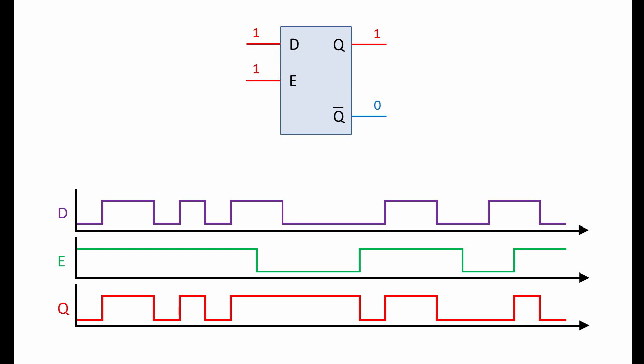We're interested in the relationship between D, E and Q, so here they are on a shared time axis. Not Q is always the inverse of Q, so we haven't included it on this diagram.